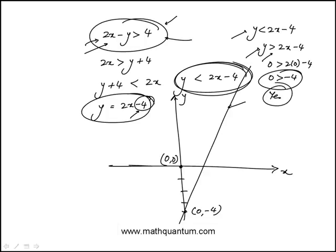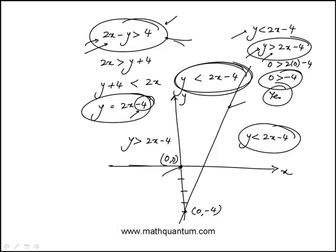Which means that this point satisfies this inequality which means that that section is y is greater than 2x minus 4 and the other one is y is less than 2x minus 4 which is the same as the original inequality.